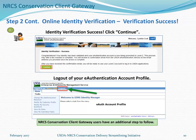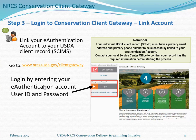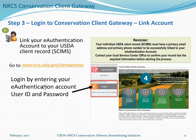Conservation Client Gateway users have one additional step to follow. Moving to Step 3, for NRCS Conservation Client Gateway users, you need to link your eAuthentication account to your USDA client record, commonly called SCIMS. This is a very important piece. As a reminder, your USDA client record cannot be linked to your eAuthentication account if it does not have the required primary email address and phone number. If you're uncertain your record has this information, please contact your service center office before starting.